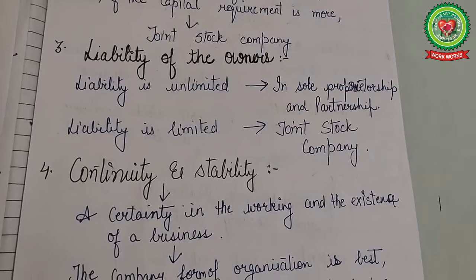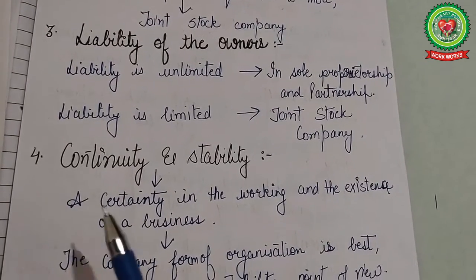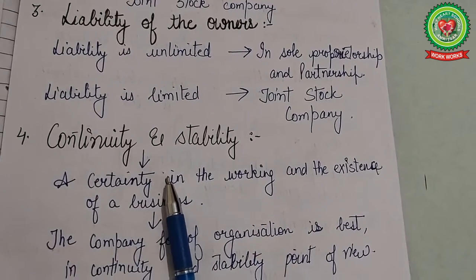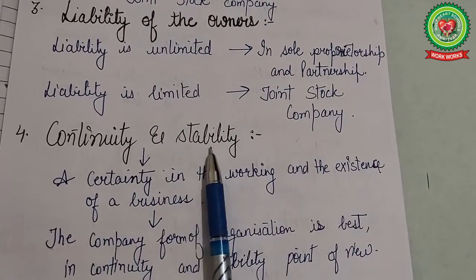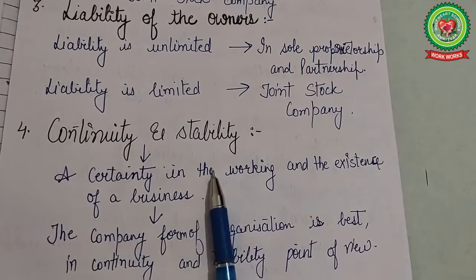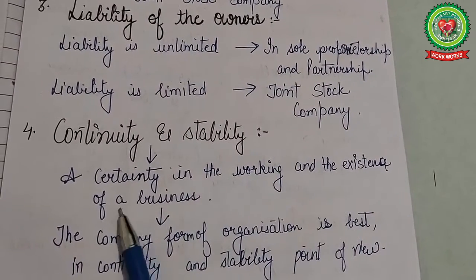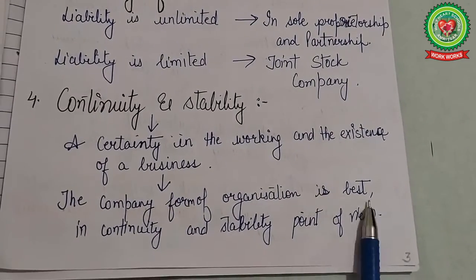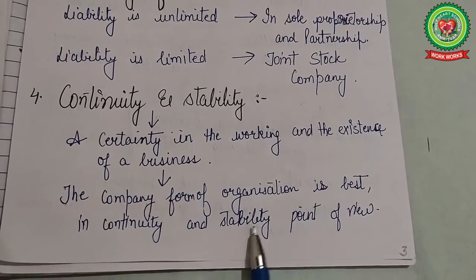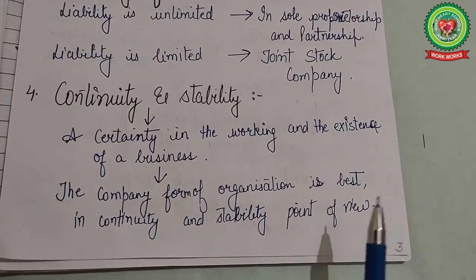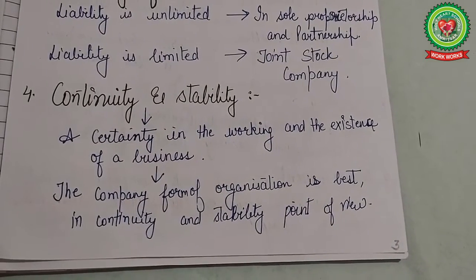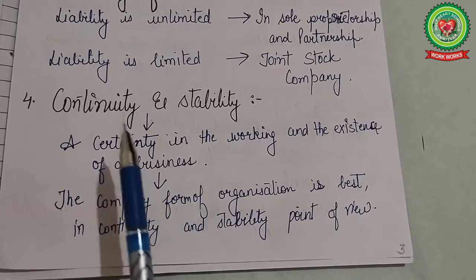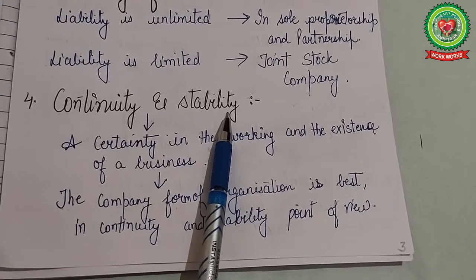The next factor is continuity and stability. Every businessman wants maximum stability of his business. Continuity and stability means certainty in the working and existence of the business. The company form of organization is best from the continuity and stability point of view, because sole proprietorship and partnership forms of organization are the most unstable.